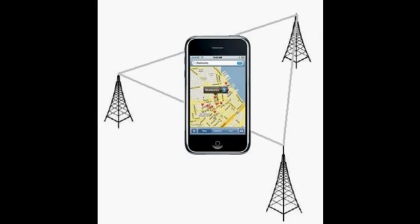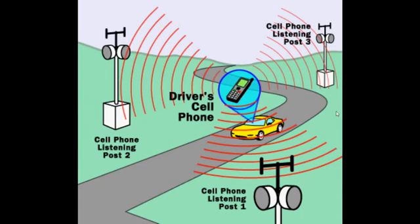As the cell phone moves away from one tower and closer to another, the signal automatically switches to that closer tower. Each tower, called a Base Tower Station or BTS, has its own unique tower ID, also called a cell ID. As soon as a tower gives access to a cell phone, the cell ID is automatically displayed on the tracking software, indicating which tower and area is serving that mobile.